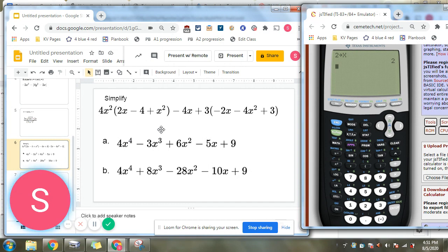So we're going to plug in 2 for x up here and see what it gives us. 4x squared times 2x minus 4 plus x squared minus 4x plus 3 times negative 2x minus 4x squared plus 3. And we get 5.